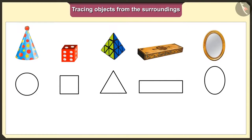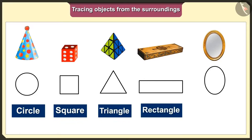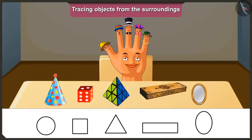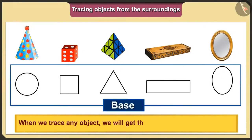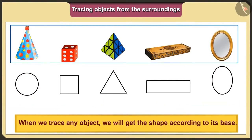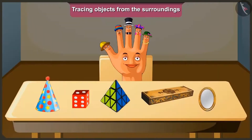Today we traced the objects in our surroundings and got the shapes like circle, square, triangle, rectangle and oval. Remember that when we trace any object, we will get the shape according to its base.